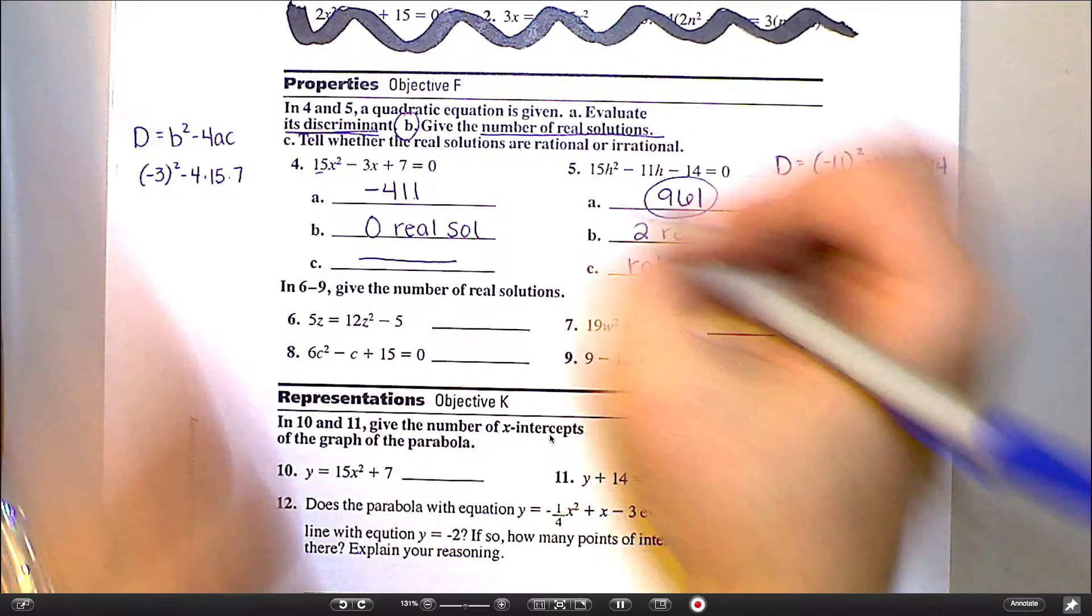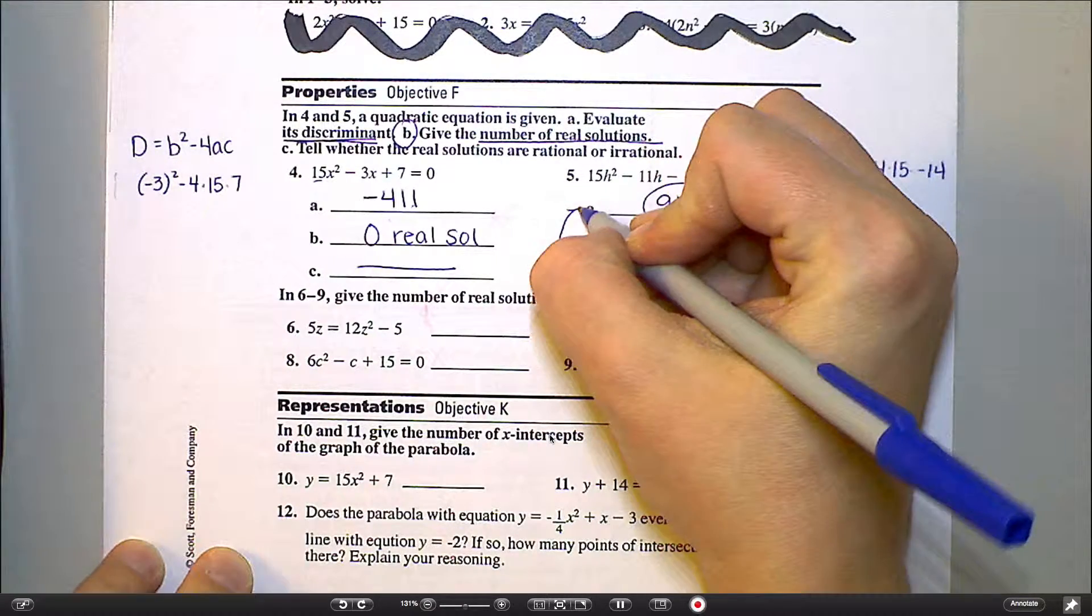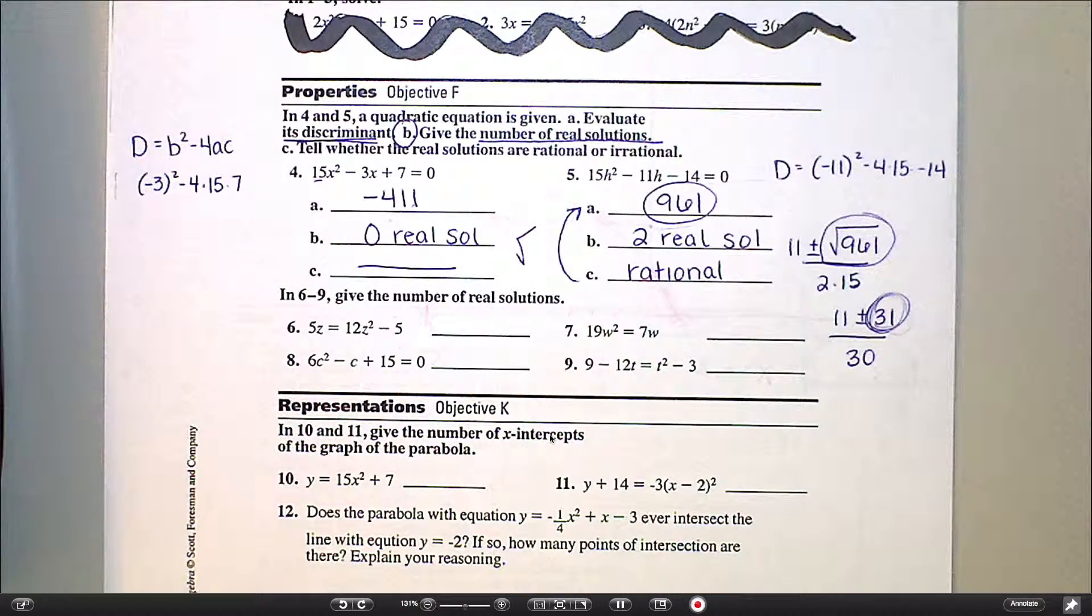So to answer this question, to answer part C, go back to part A and take a square root and see how your numbers come out. If they're nice and clean and pretty, it's rational. If they're crazy decimals, it's irrational.